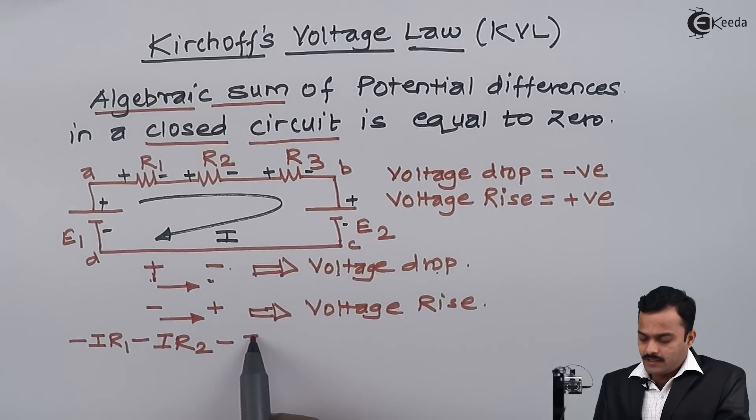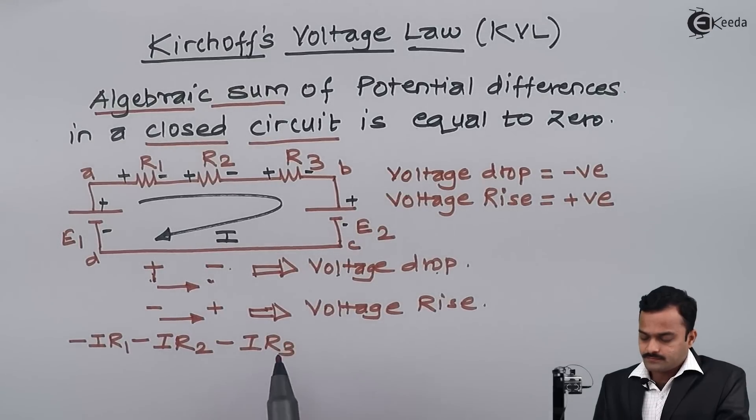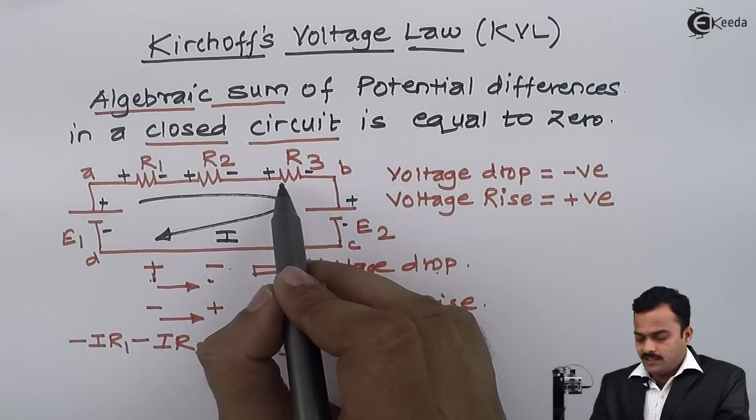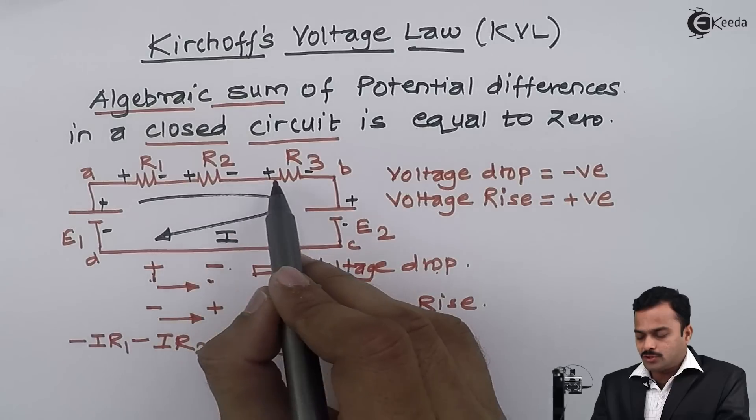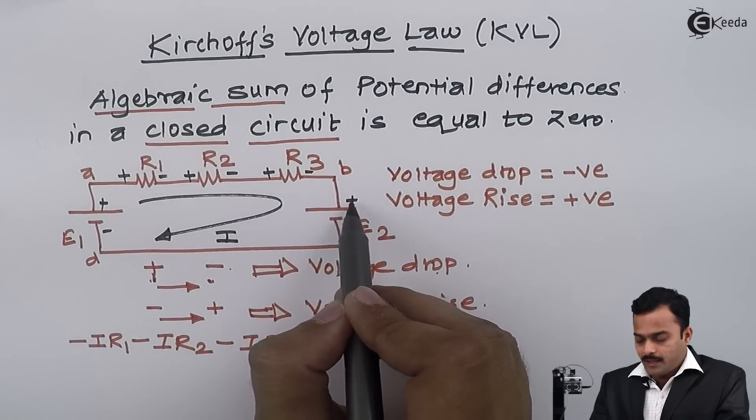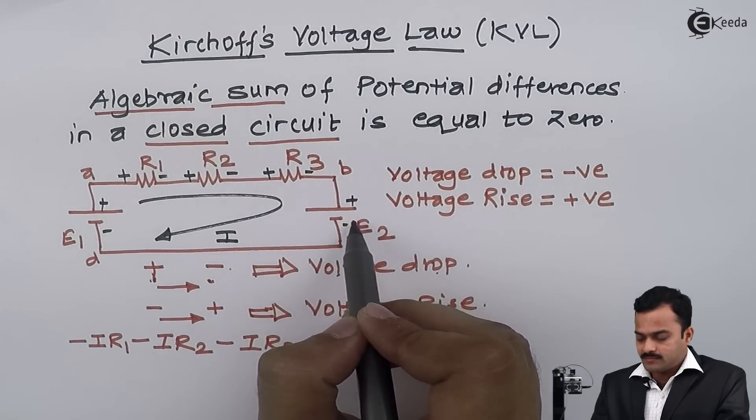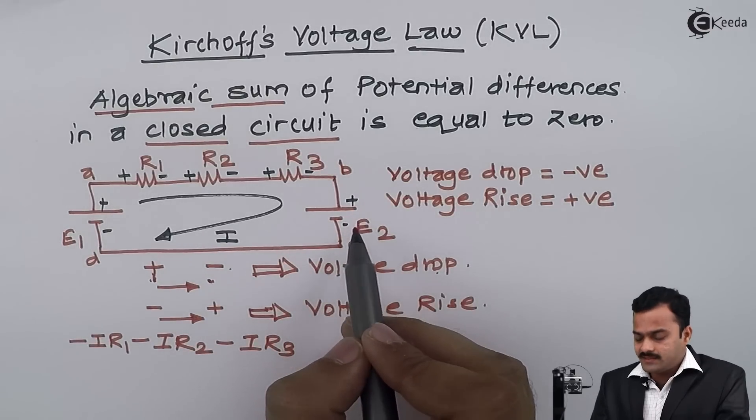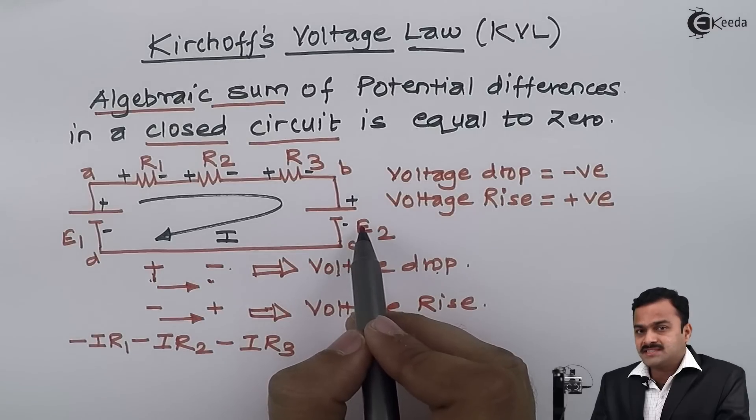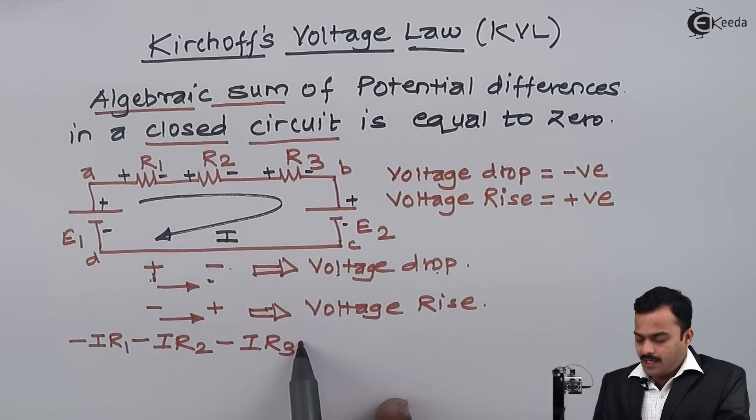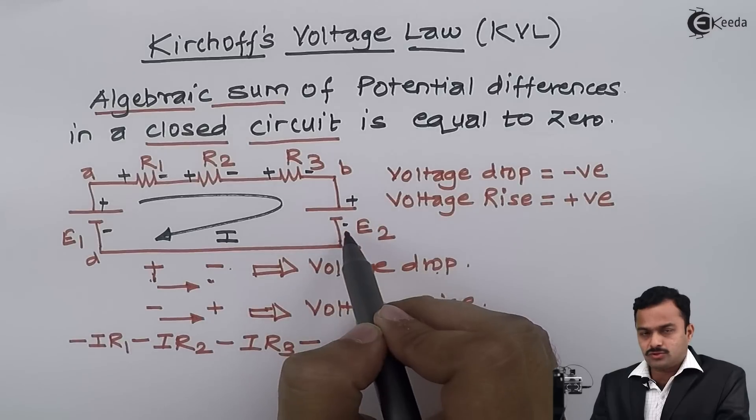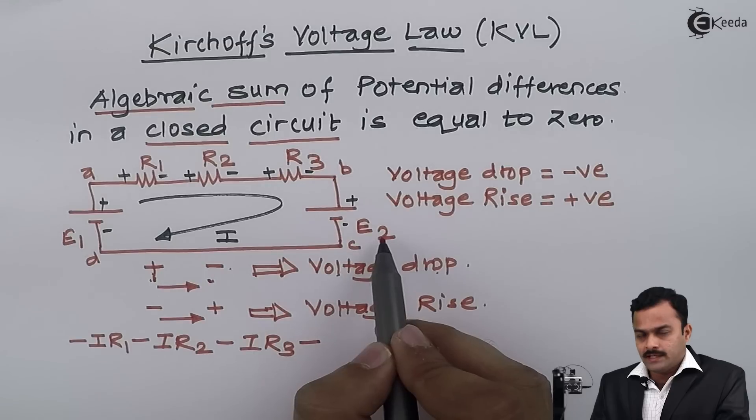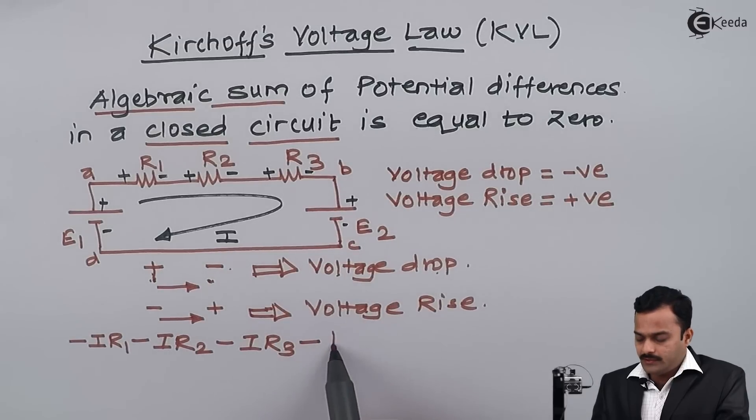Now pay attention. In the direction of current here, I am tracing all the voltage drops. I am having plus minus once again, so it's a voltage drop. But hold on, it is not a resistance, it is a fixed voltage battery. So I will have a minus sign because it is plus to minus, but I should not write I into E2. In fact I should write only E2 because that is a fixed voltage irrespective of amount of current.